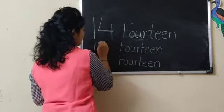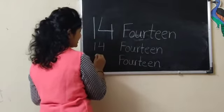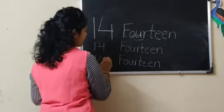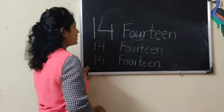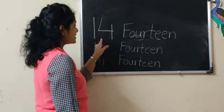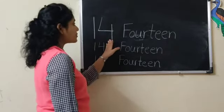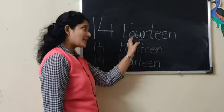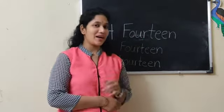Okay. 1, 4, 14. 1, 4, 14. So children, practice writing 1, 4, 14 in your class workbook. Okay. Till then, bye bye.